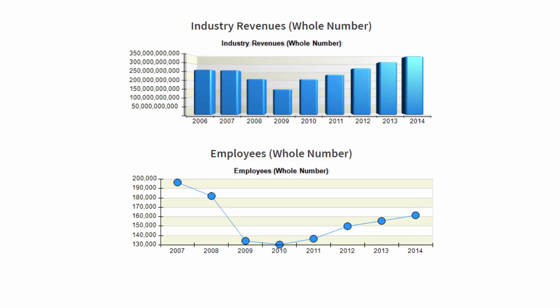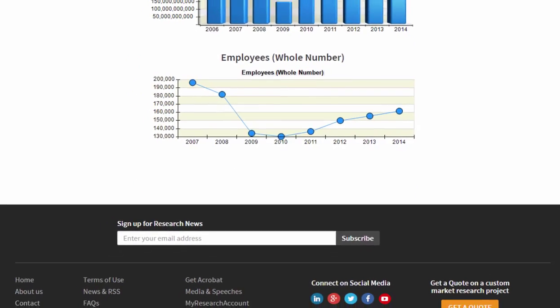Industry revenues are charted here. Notice the dip down to the recession in 2009 and then climbing back up. Employees are charted as well.